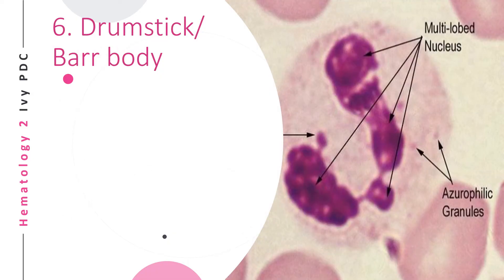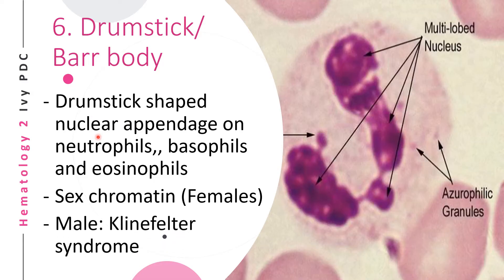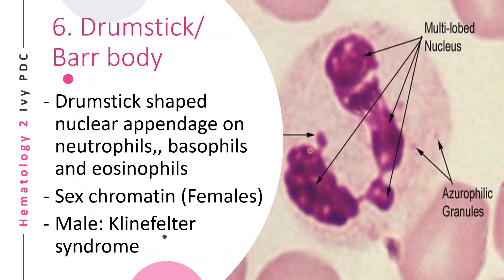The next anomaly is the drumstick or Barr body — a drumstick-shaped nuclear appendage on neutrophils, basophils, and eosinophils. It is considered a sex chromatin, representing the condensed chromatin of the inactivated second X chromosome of females. It can be seen in 1–8% of neutrophils in females. If a drumstick body is found in a male, it most likely indicates Klinefelter syndrome.